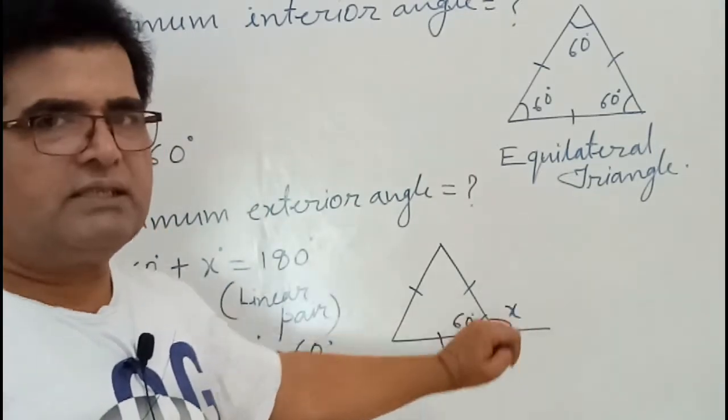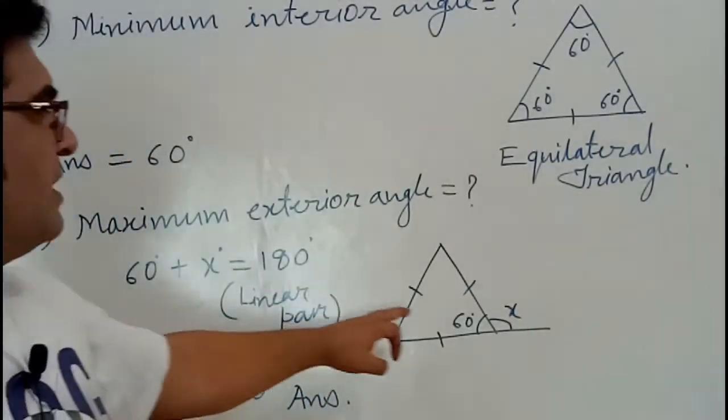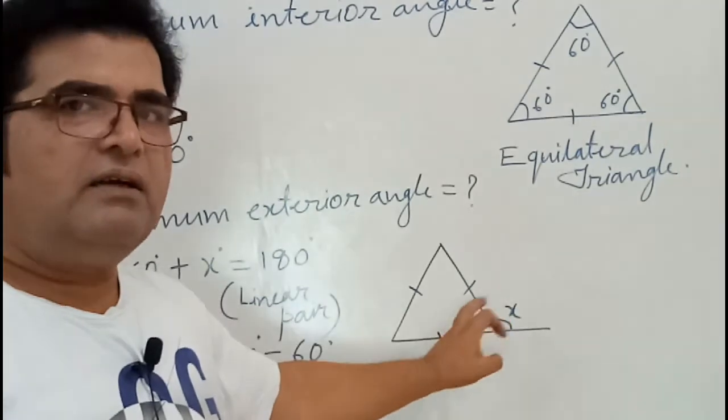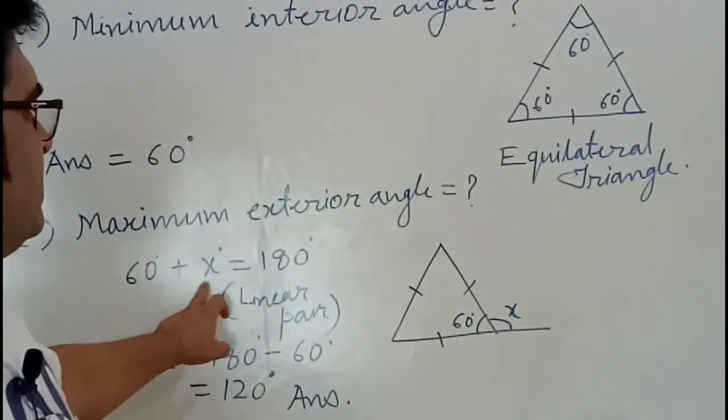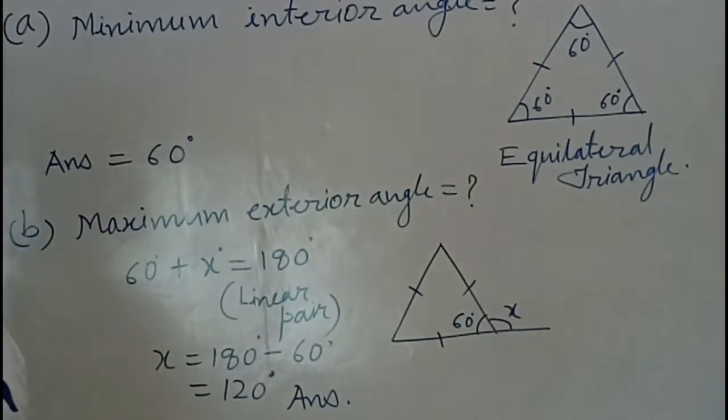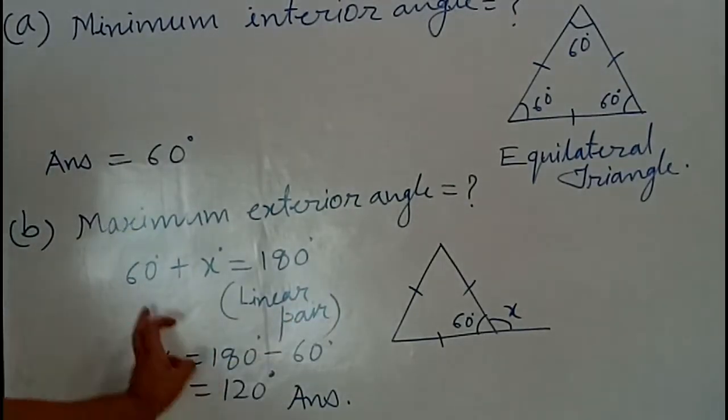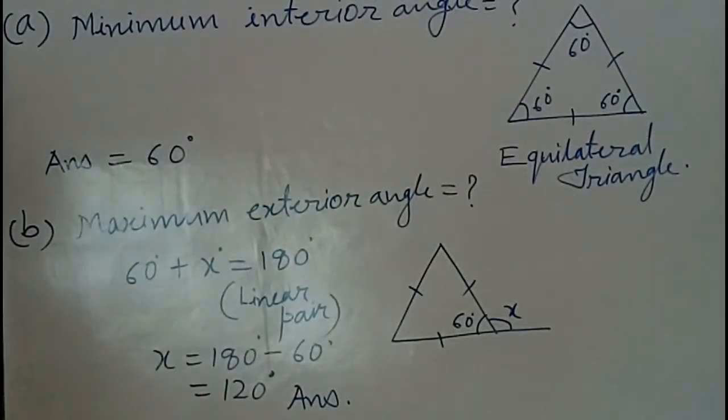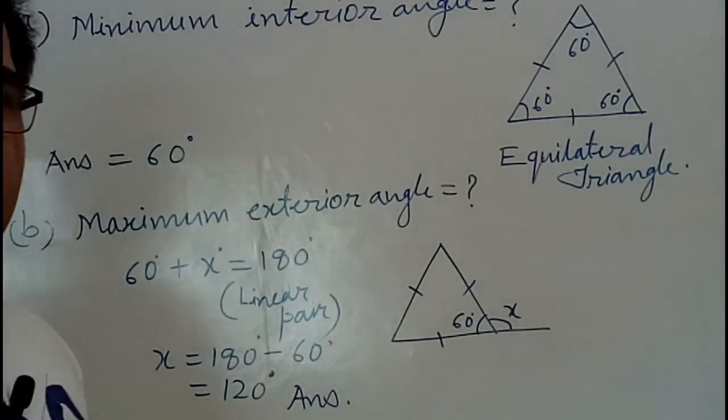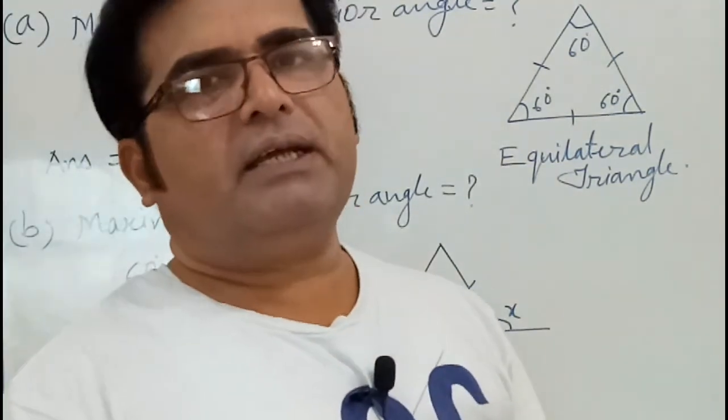So 60 plus X equals 180 degrees, because they are a linear pair of angles. Then you transpose 60 to the right-hand side, so X equals 180 minus 60, which equals 120 degrees. So the maximum exterior angle of a regular polygon is 120 degrees.